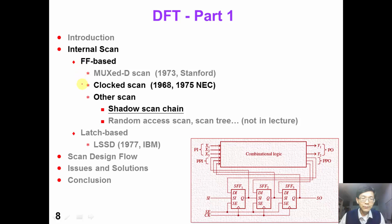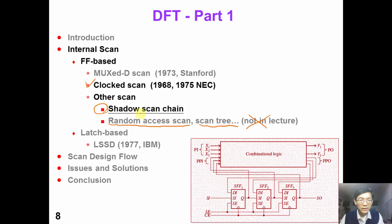There are actually many other scan architectures available, such as random access scan or scan tree architecture. Due to time limitations, we are not going to cover those in this video. We will only cover the shadow scan chain architecture.